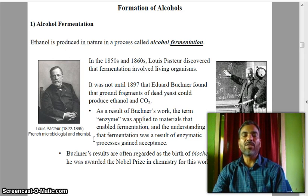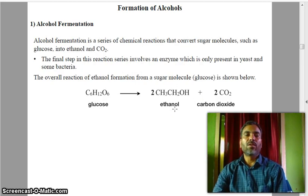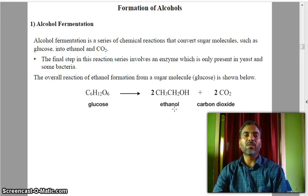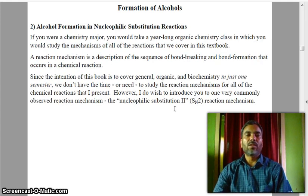The understanding that fermentation was a result of enzymatic processes gained acceptance. Buchner's results are often regarded as the birth of biochemistry, and he was awarded the Nobel Prize in Chemistry for his work in 1907. Alcohol fermentation is a series of chemical reactions that converts sugar glucose molecules into ethanol and CO2. The final step involves an enzyme only present in yeast and some bacteria.